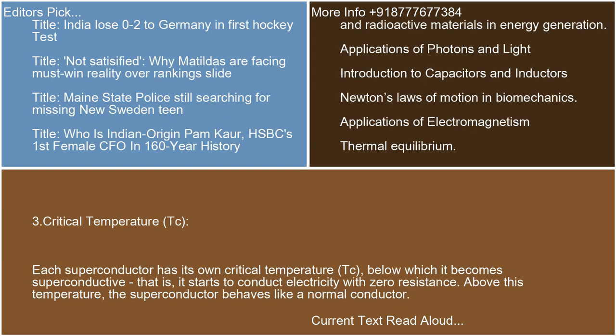Each superconductor has its own critical temperature, TC, below which it becomes superconductive — that is, it starts to conduct electricity with zero resistance. Above this temperature, the superconductor behaves like a normal conductor.